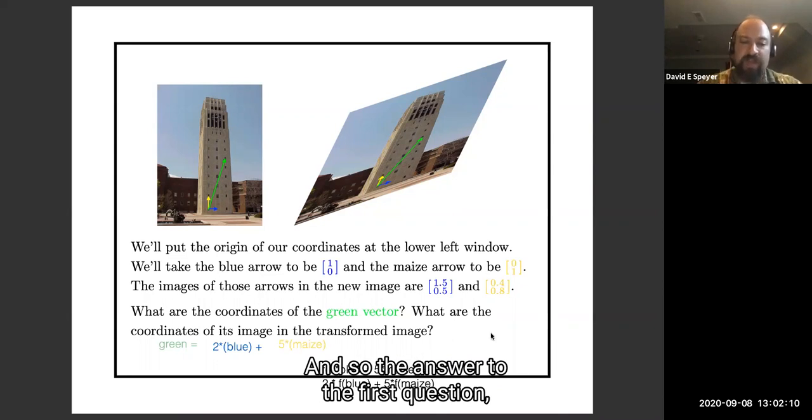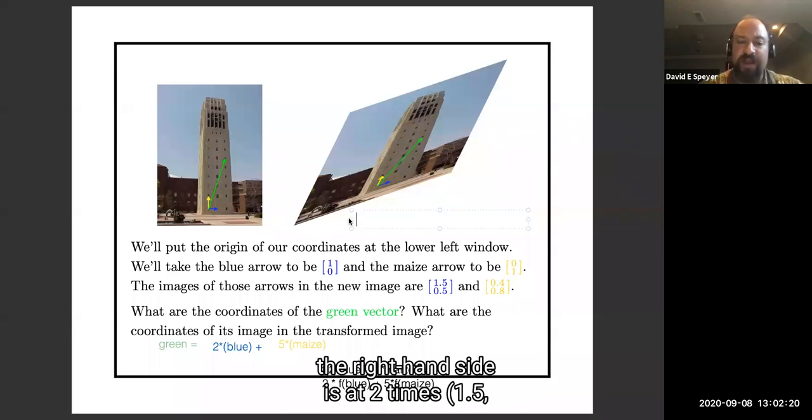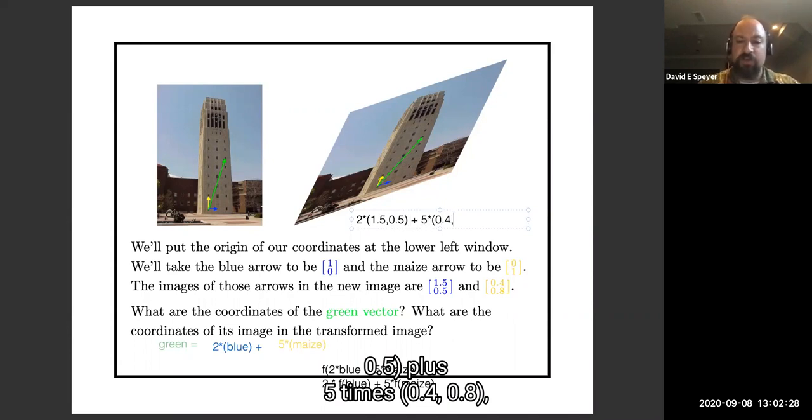The answer to the first question, what are the coordinates of the green vector? The green vector on the left-hand side is at 2, 5, and the green vector on the right-hand side is at 2 times 1.5, 0.5, plus 5 times 0.4, 0.8, which is 5, 5, I believe.